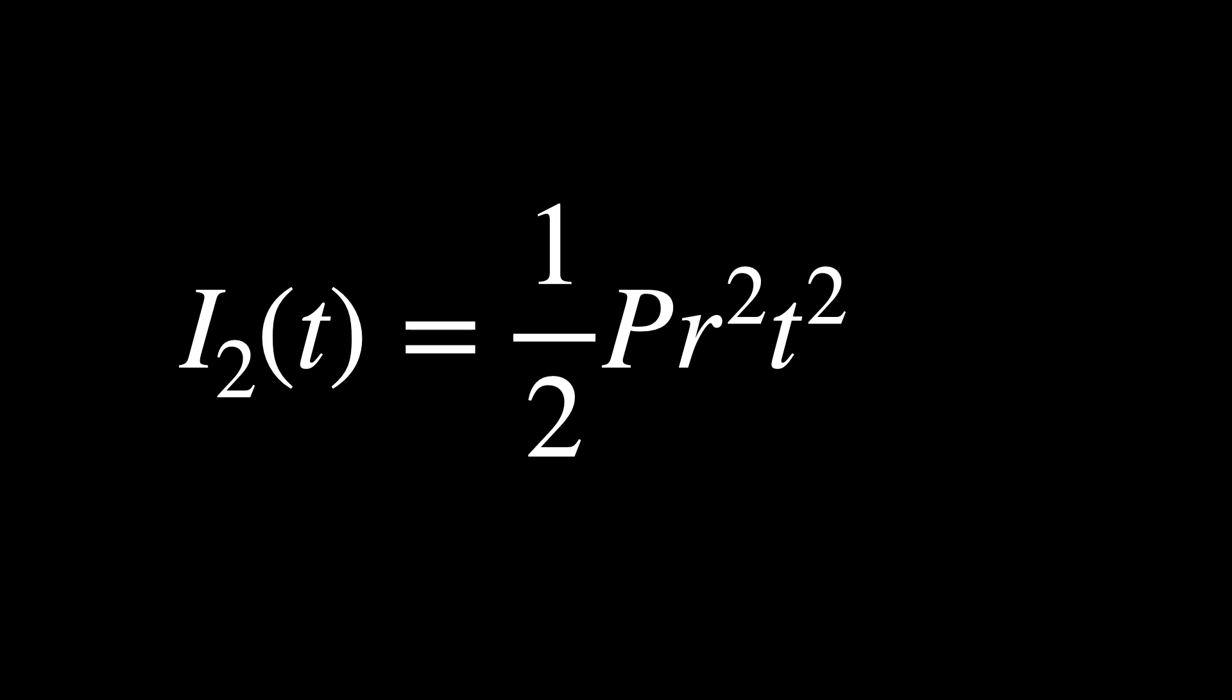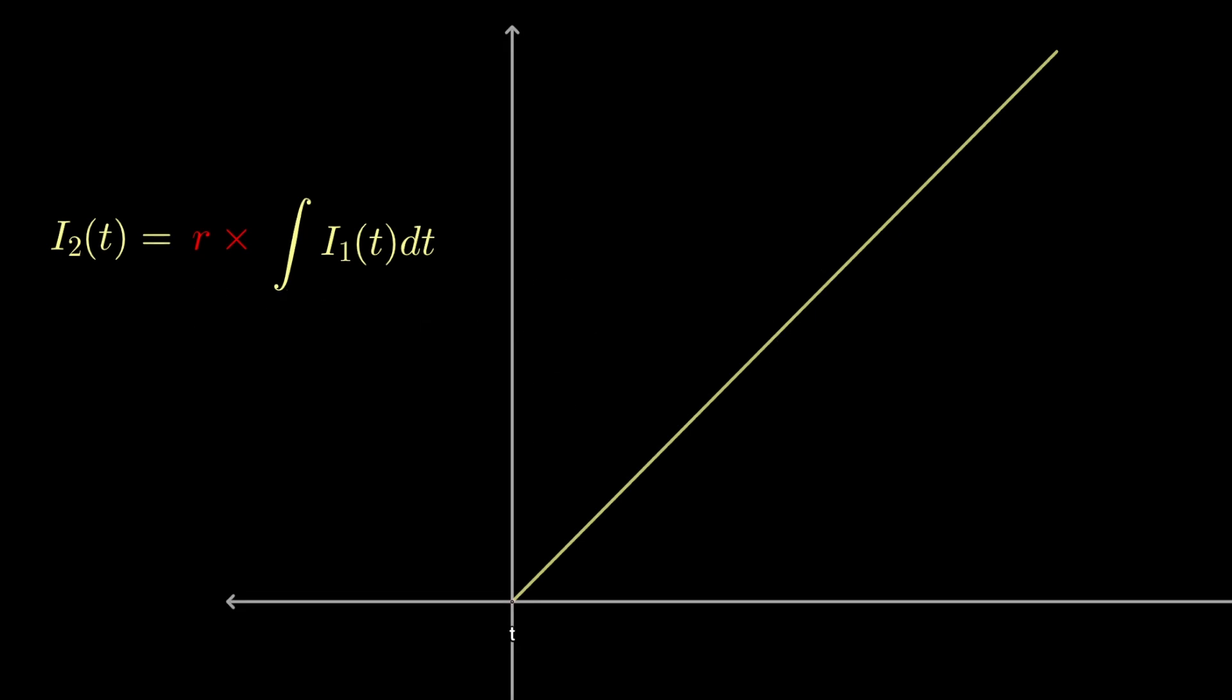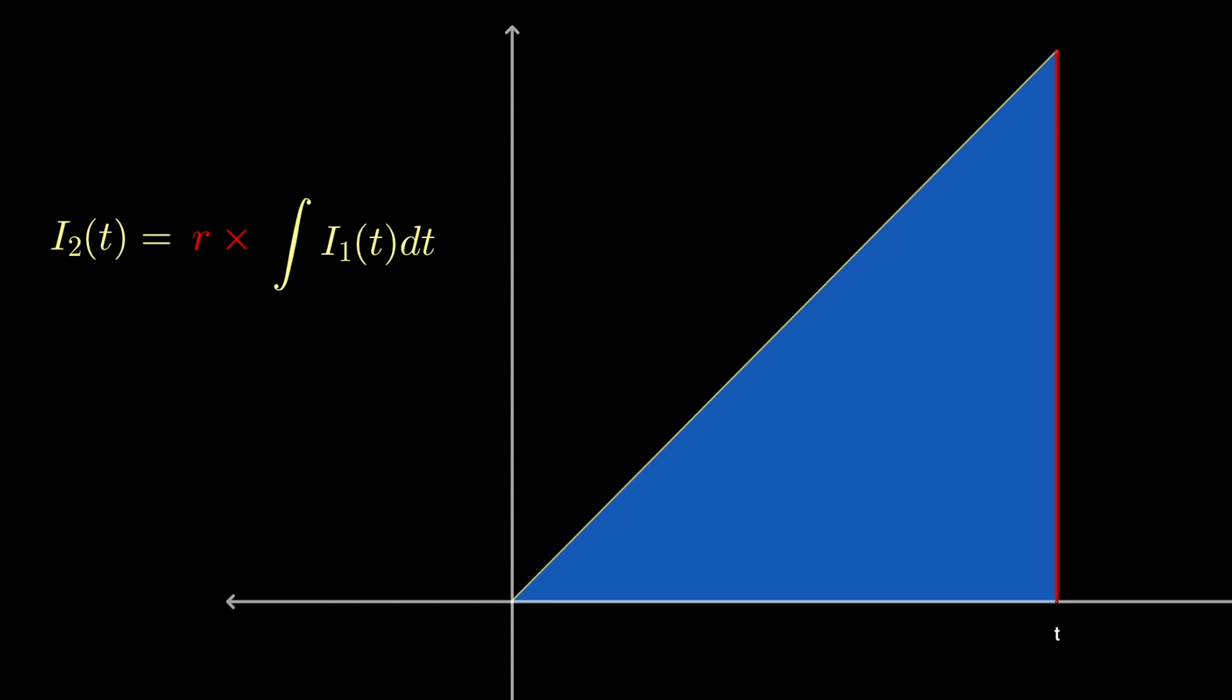Instead of growing linearly, this grows quadratically. Essentially, we're integrating the primary interest itself over time, and then multiplying this quantity by R.